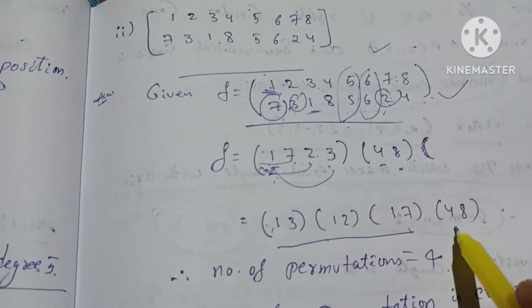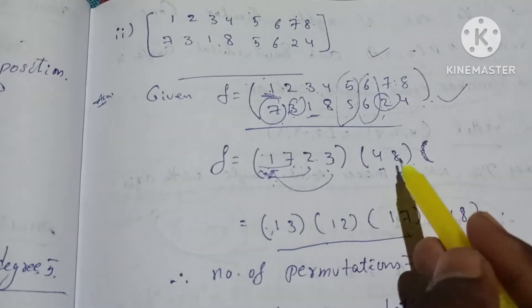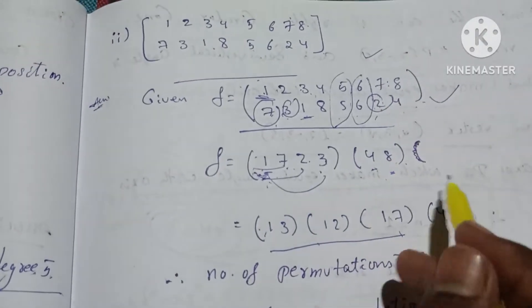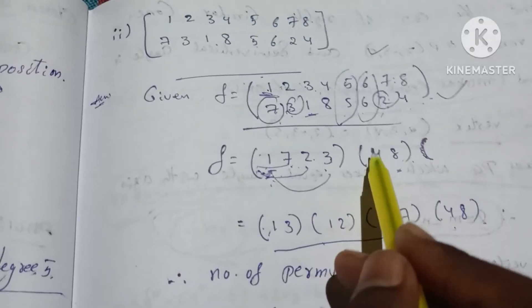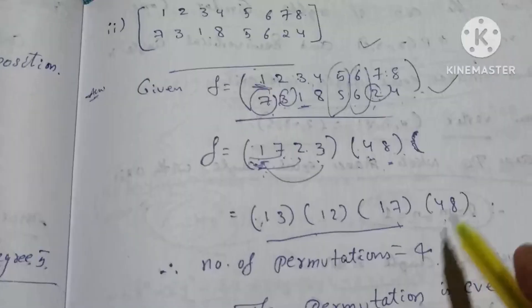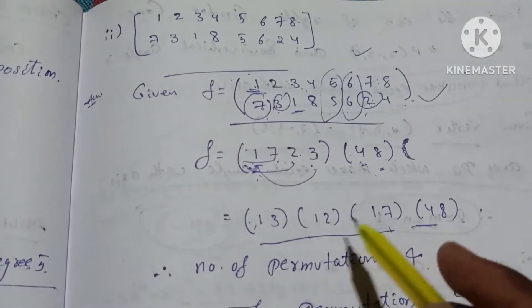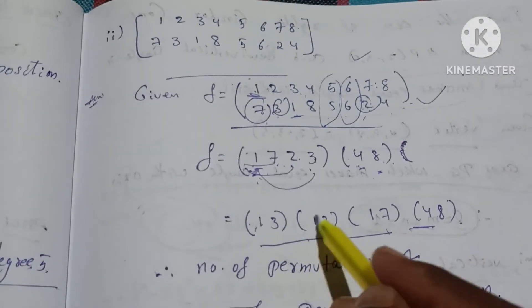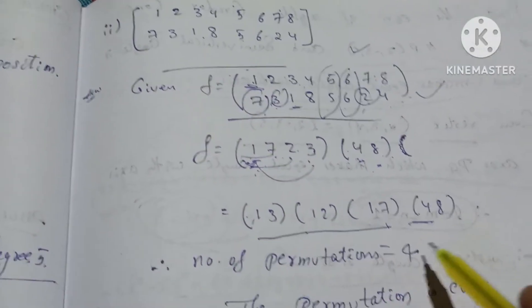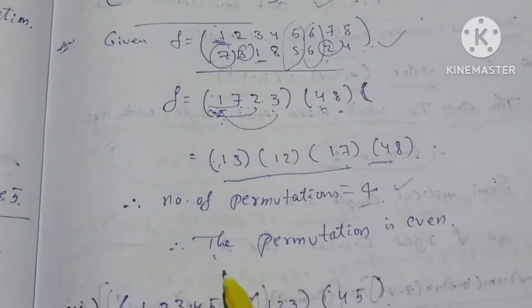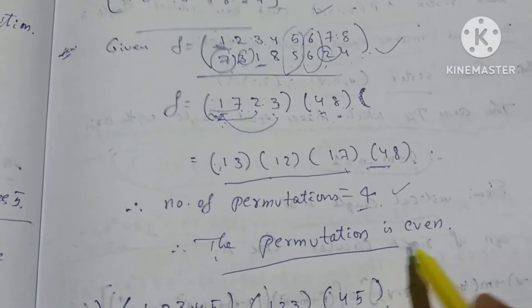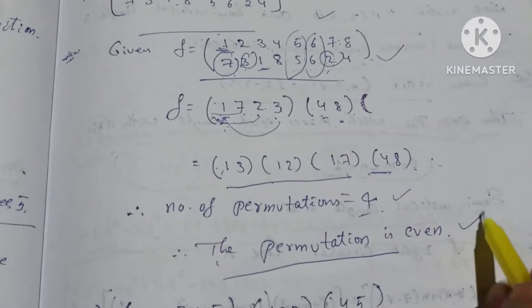Four is eight. We will add four transpositions back and the first element. Four is eight. So: one, two, three, four — four is an even number. Therefore, the permutation is even.